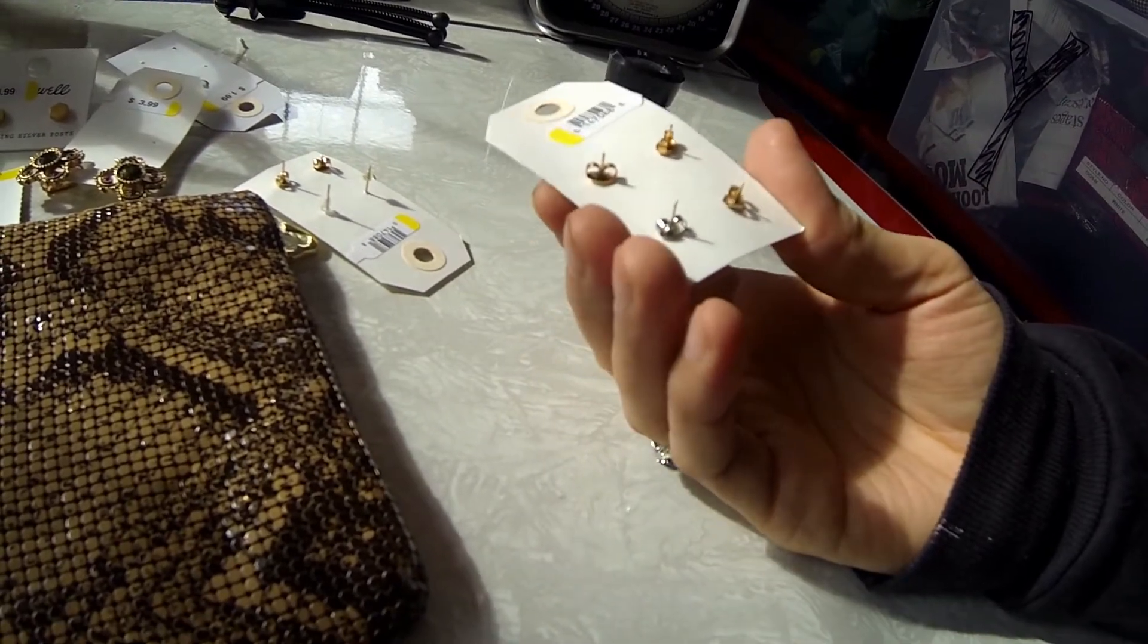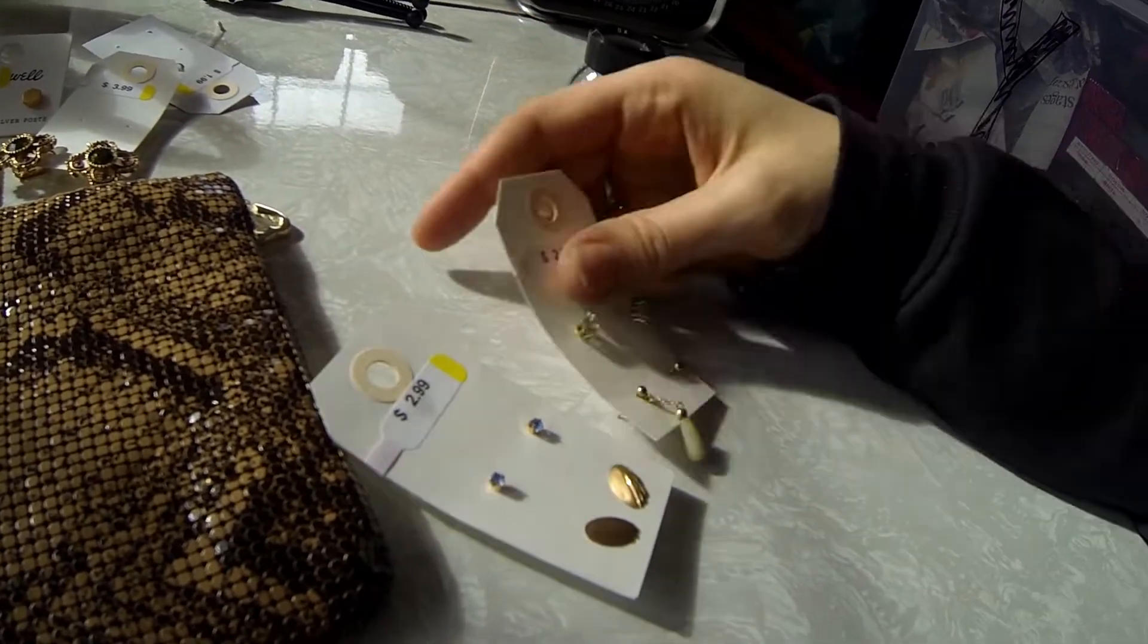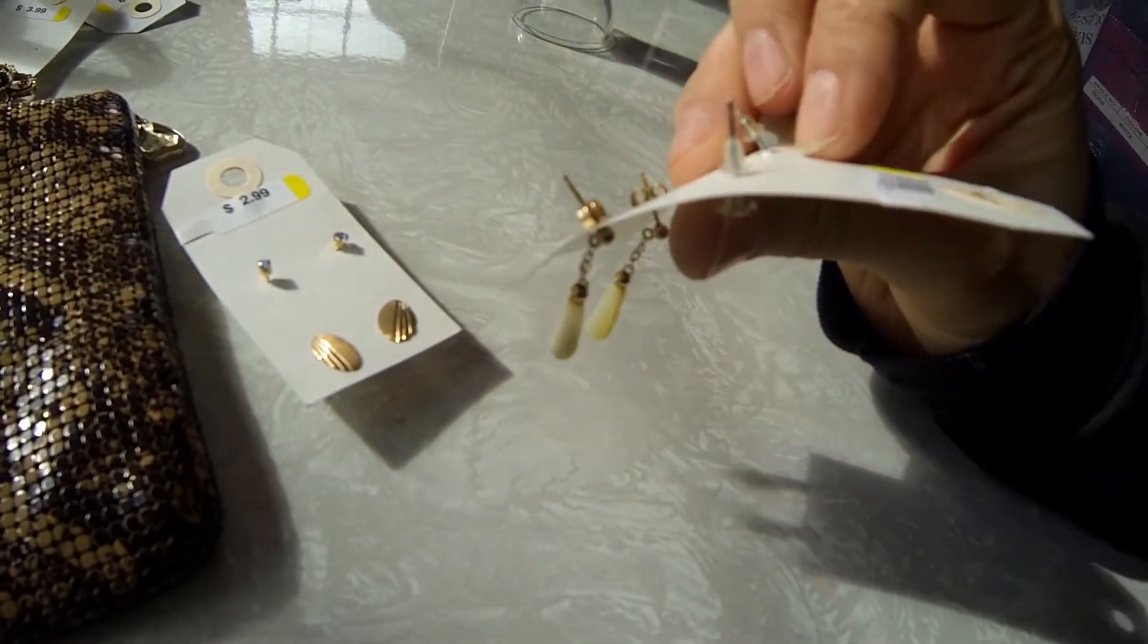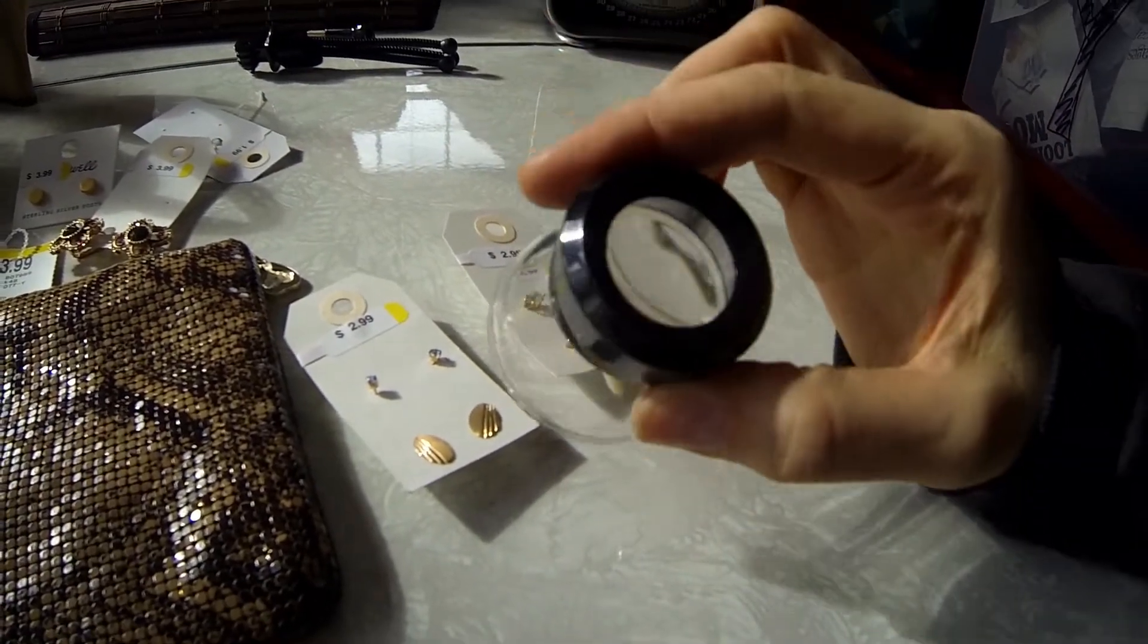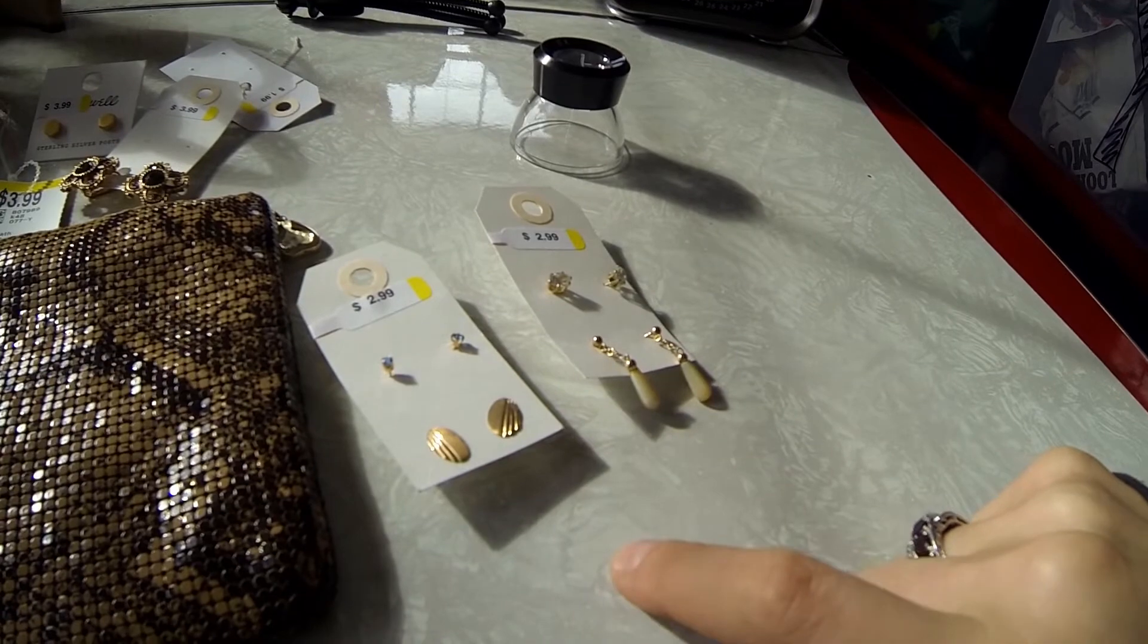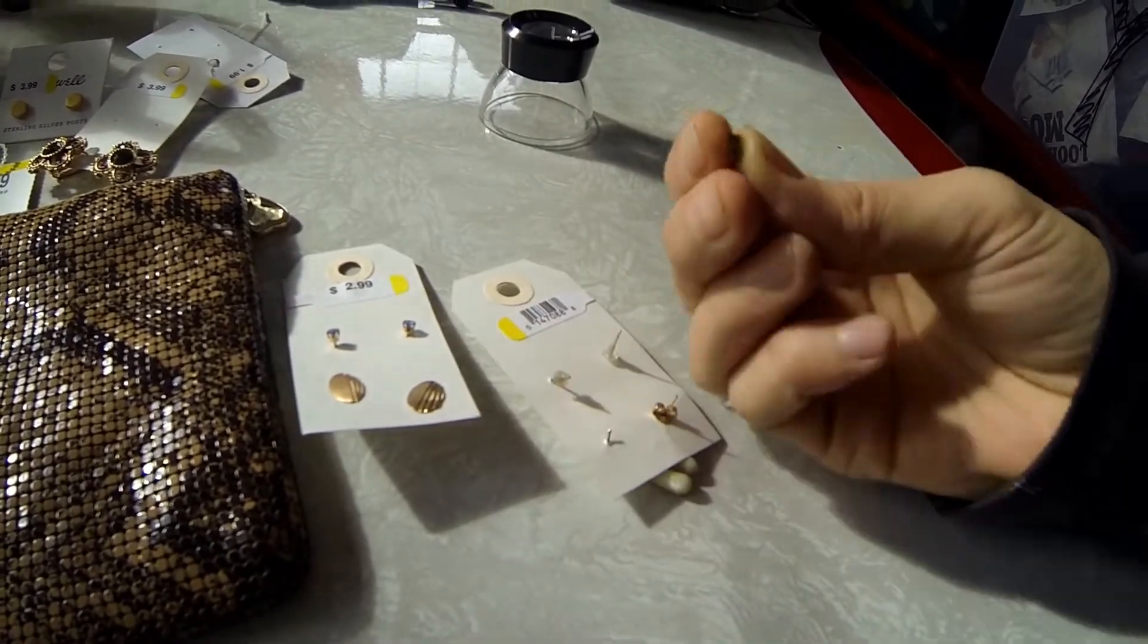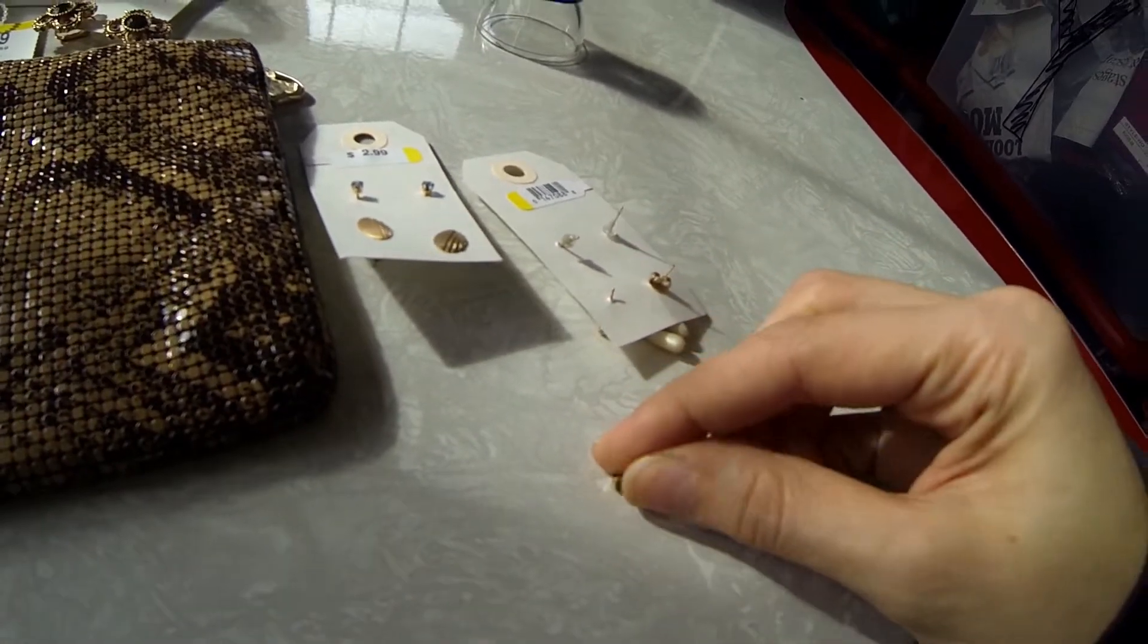Now these, however, some of these, when I checked the backs of these earrings. I paid $1.50, $1.50. And I need to check them again under the loop here to see what it really says. But one of these did say 14 karat gold. I'm really excited about that. I think it's this one. Let me see if I can. Yeah, that's the one. So it says 14 karat under the loop.